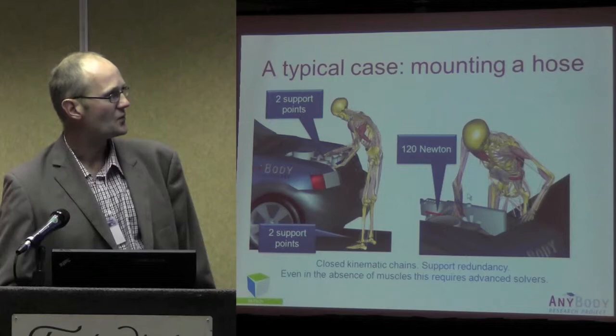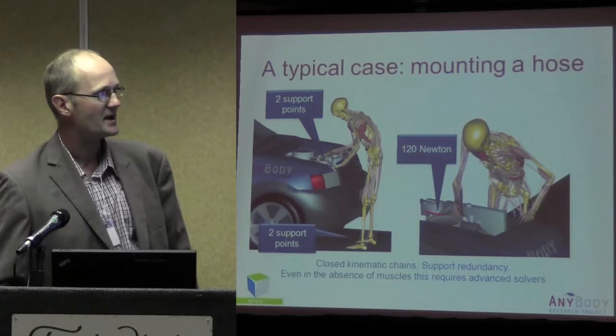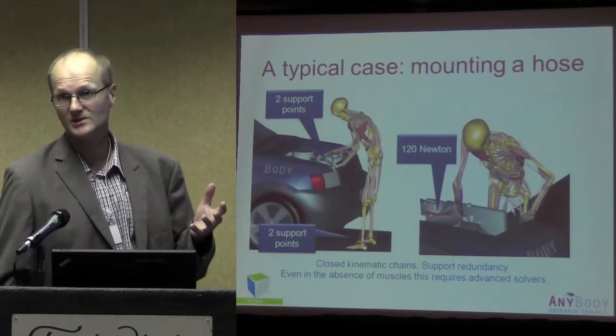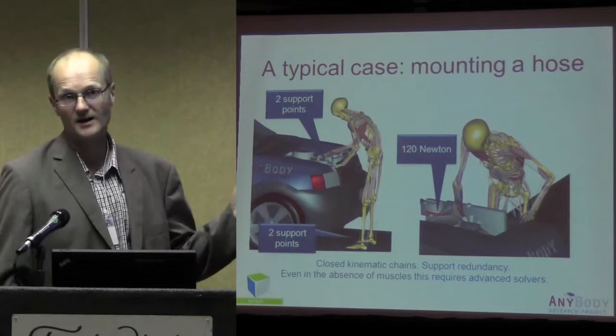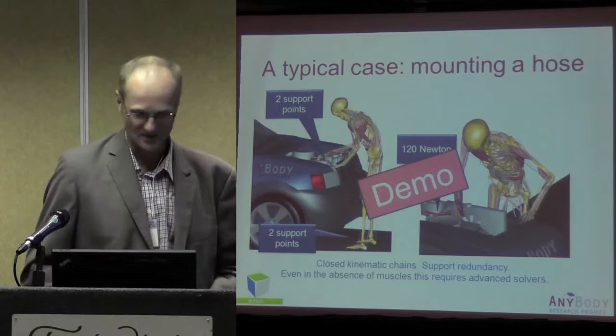Now, if this were an open chain system, we probably wouldn't be able to model this. Because as soon as we have the hand holding onto the hose and we have the engine compartment with the other hand holding on here, then we are creating a closed kinematic chain. And even if we just had joint torques, we would get into a situation where we would have statical indeterminacy, and equilibrium alone would not allow us to determine this. So I'm going to do a little demo just to show you how badly wrong this can go if we just change a little bit in the model.